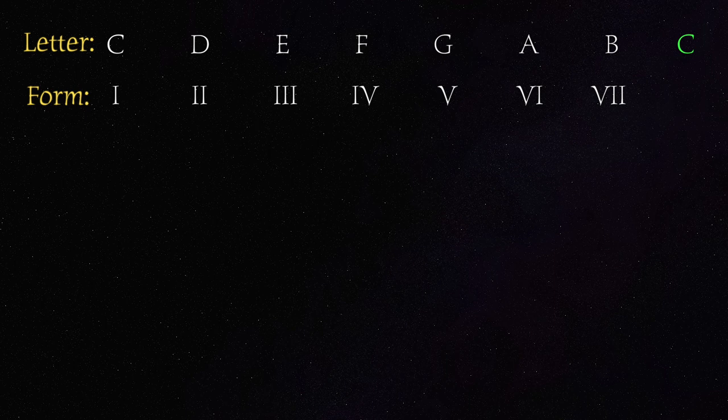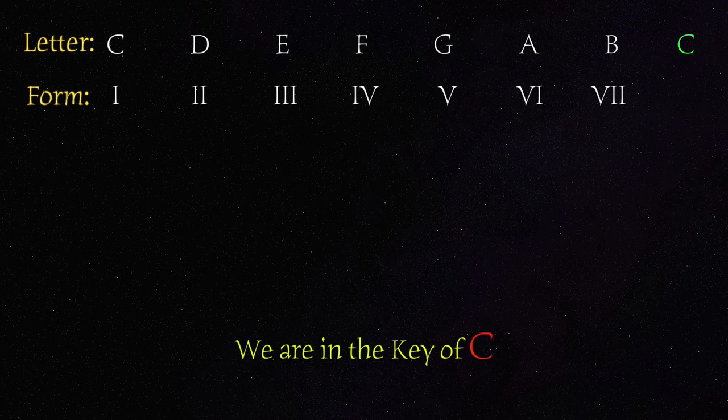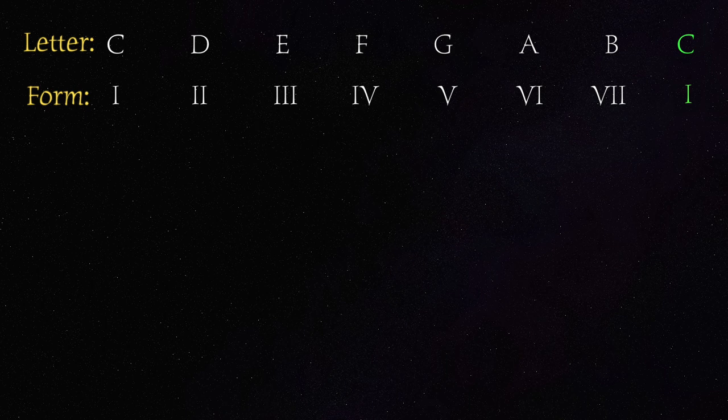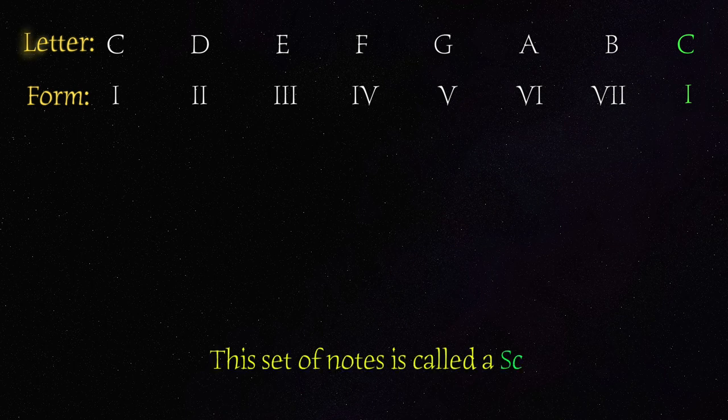G is given roman numeral V since the fifth. A is given roman numeral VI. B is given roman numeral VII. The C we know it's the octave so it can be roman numeral I. It repeats. It starts a new register. So this is the form. It is usually used to generalize to other keys. The form gives the function of each note on the scale.